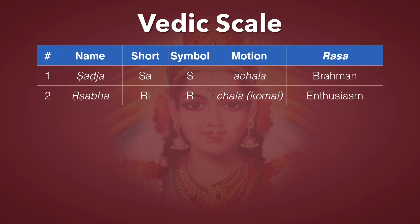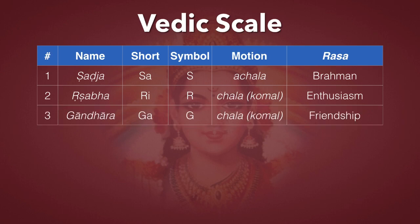Number three is Gandhara, expressed for short as Ga. The symbol is G, and it's also Chala. It can be either Shuddha or Komal.